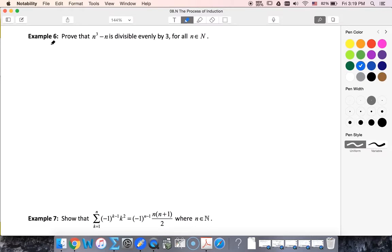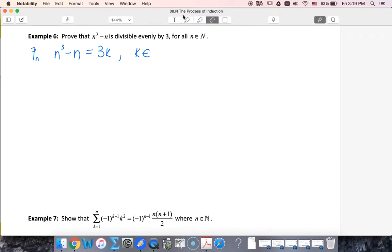So in this case our P sub n statement is going to be that n³ - n is equal to 3k when k is an integer. And of course we have that n is a natural number.